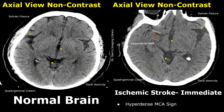This area is the sylvian fissure. This is the third ventricle. And over here is the quadrigeminal cistern.